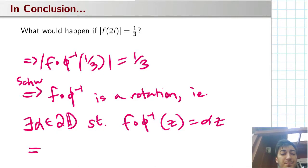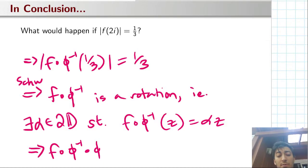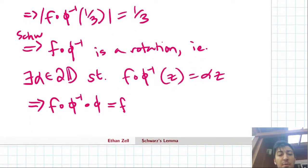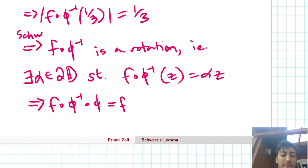But we know something about this map, we know that it's just a rotation, and we know that this map is the Cayley transform. So really, f itself is just some rotation applied to the Cayley transform.